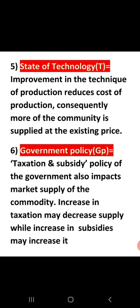So these were the six determinants: own price of commodity X, price of related goods, number of firms in the market, goal of the firm, state of technology, and government policies. In today's lecture we understood supply, understood the difference between supply and stock, the difference between quantity supplied and supply, studied individual supply schedule and curve, studied market supply schedule and curve, and studied the determinants of supply.